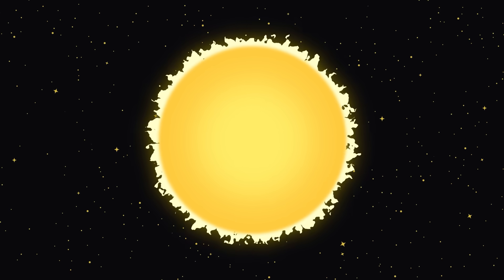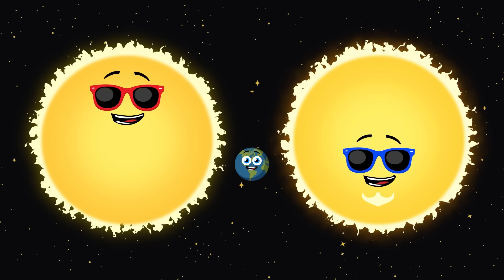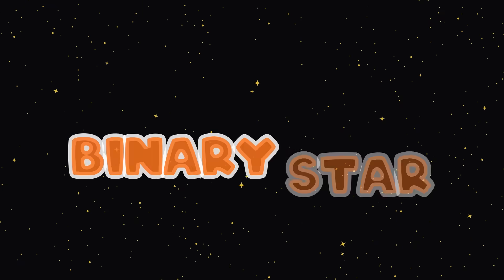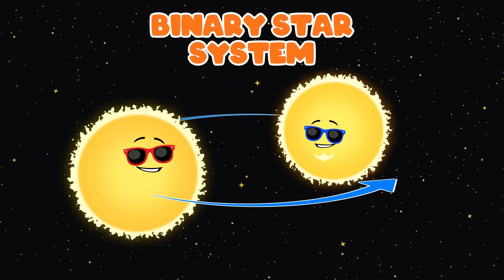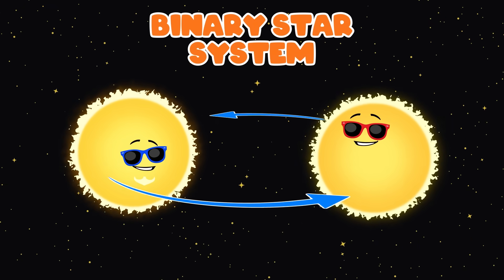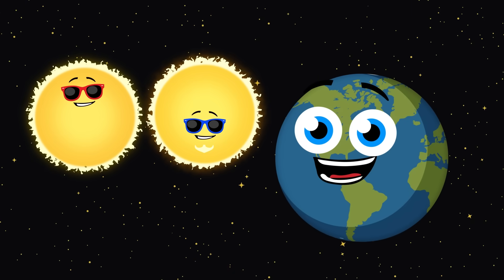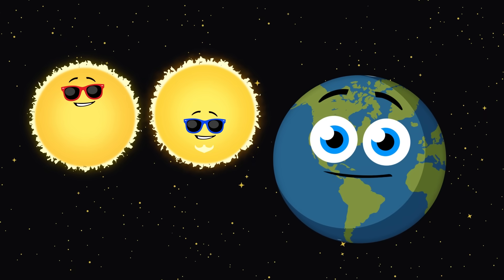What would happen if the Earth had two suns? Let's take a look at the Earth with a binary star system. A binary star system is two stars that are bound by gravity and orbit each other. If the sun was replaced by a binary star system, what would happen to the Earth if this did happen?